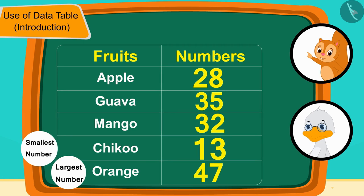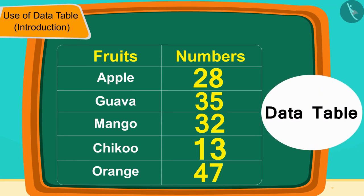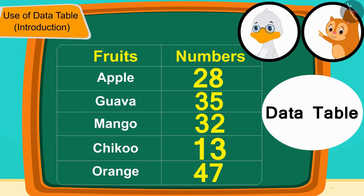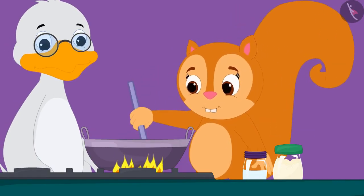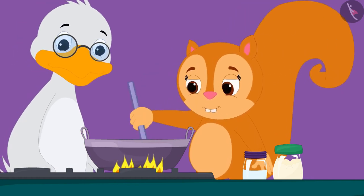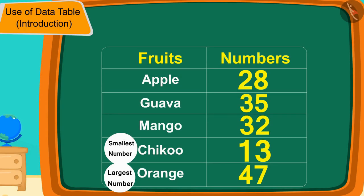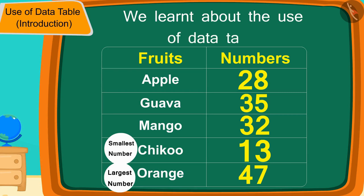Children, in this way you can get various kinds of information by using the data table. Uncle too, with the help of Chanda's table, found that the number of oranges was the largest. In this lesson we learned about the use of a data table. In the next video we will learn more about it through some interesting examples.